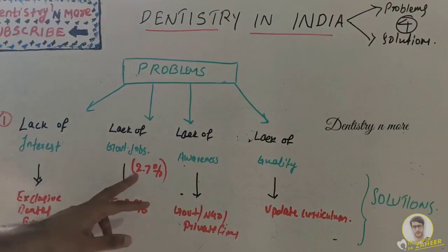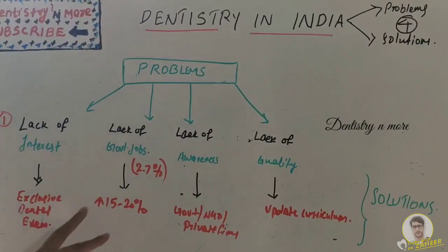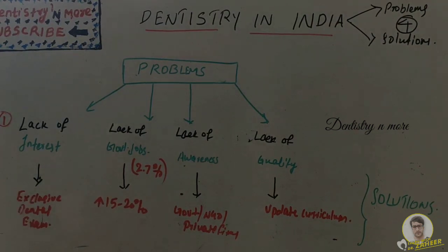But still, it is proportionately very very low. What I feel is at least 15 to 20 percent should be the intake into government jobs. That is a comparatively better proportion. 2.7 is very very minimal.